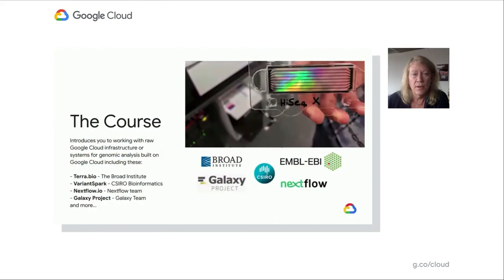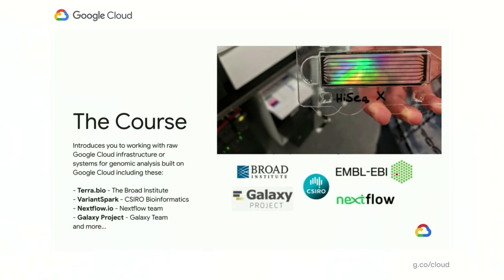This course introduces researchers to working with raw Google Cloud infrastructure or systems for genomic analysis built on the Google Cloud, including Terra.Bio from the Broad Institute, Variant Spark Library from CSIRO Bioinformatics in Sydney, Australia, Nextflow I.O. from the group in Europe, Galaxy Project, which is global, and others. Now to get an understanding of the complexity, let's first consider batch compute for analysis.